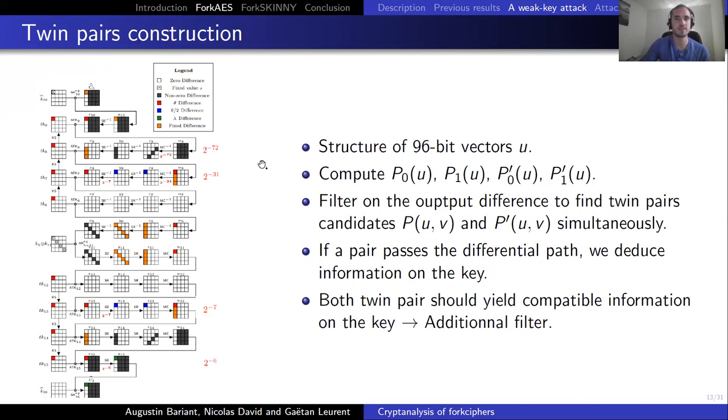How do we construct these twin pairs? We build a structure of 96-bit vectors U. Then we compute P0U, P1U, P0'U and P1'U. We filter the output difference simultaneously. And if a pair passes that has the right output difference, and if it passes the differential, then because of the last rounds, we can deduce some information on the key. And if this information deduced is compatible between P and P', we keep the pairs, else we reject them. So this leads to an additional filter.